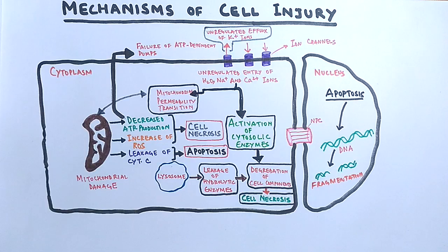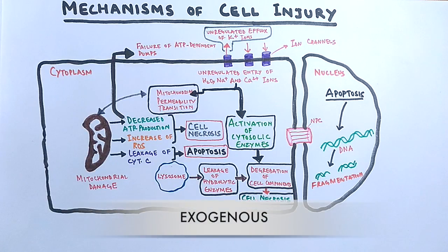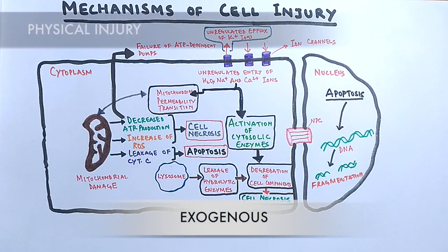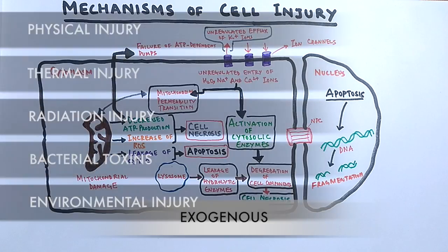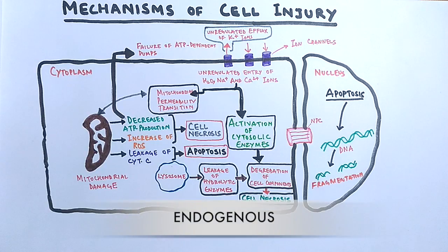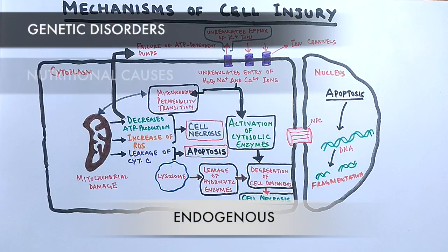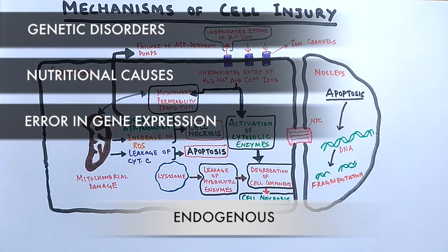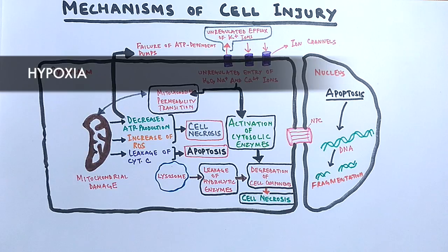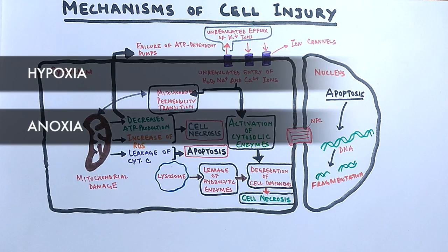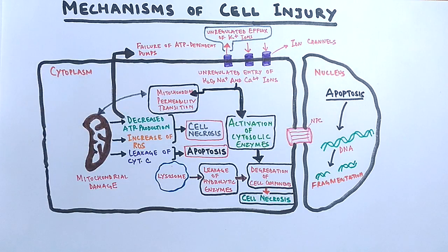Finally, damage to the cell occurs through this programmed cell death. The causes of cell injury include exogenous causes such as physical injury, thermal injury, radiation, bacterial toxicity, and environmental injury, and endogenous causes such as genetic defects and nutritional deficiency. The most relevant causes are hypoxia — defined by a decrease in oxygen supply — and anoxia.